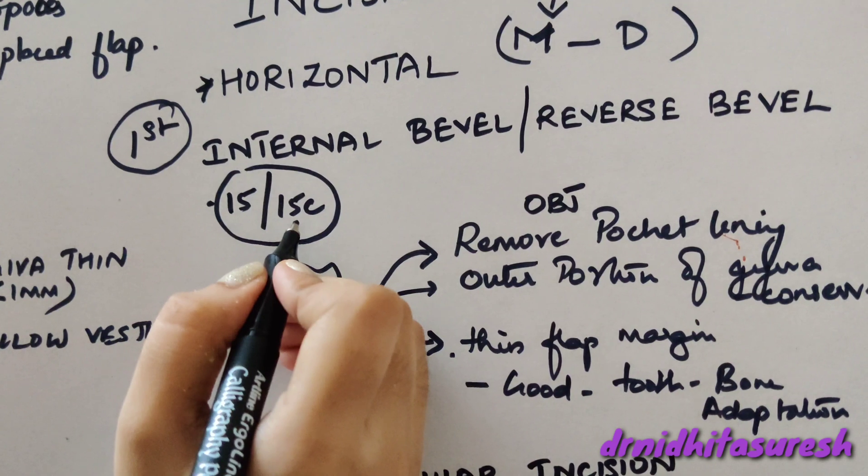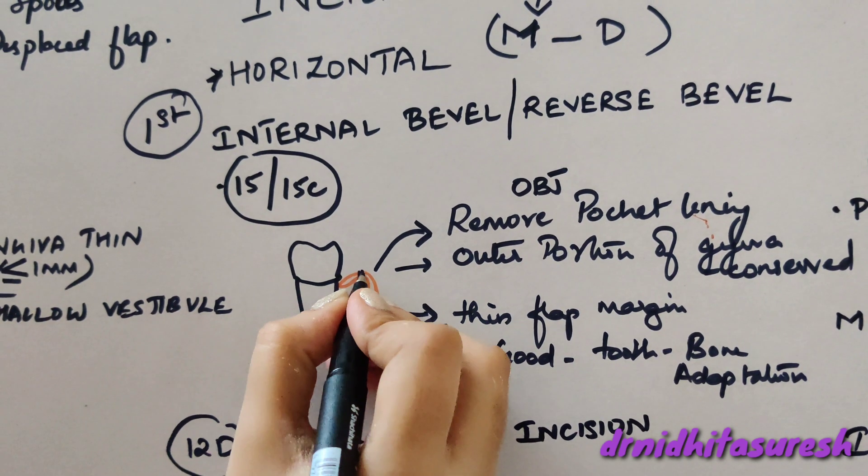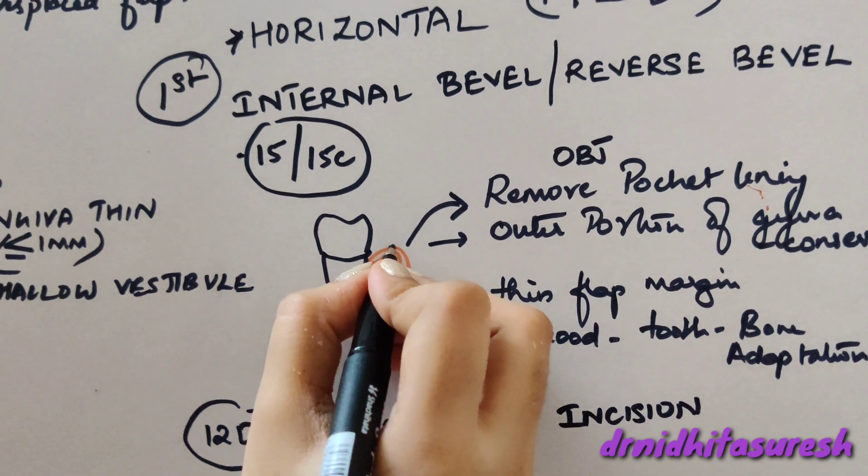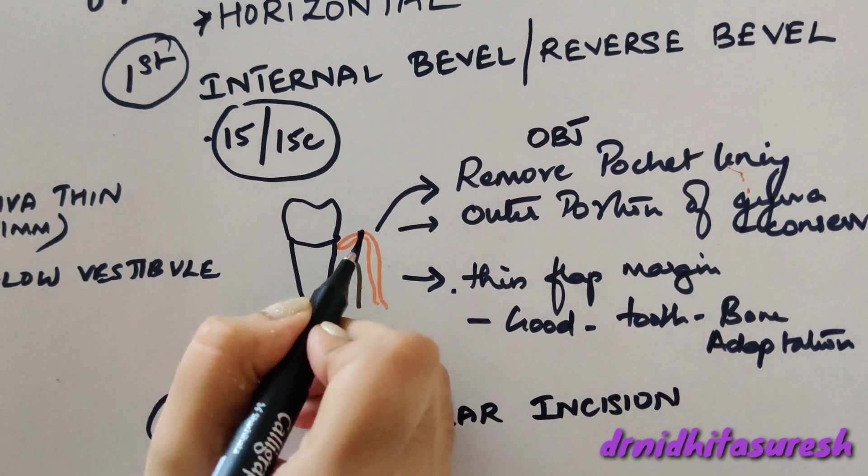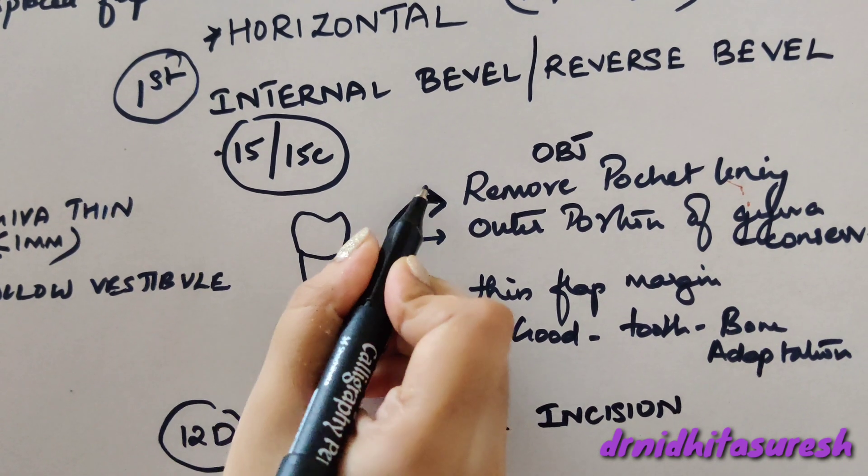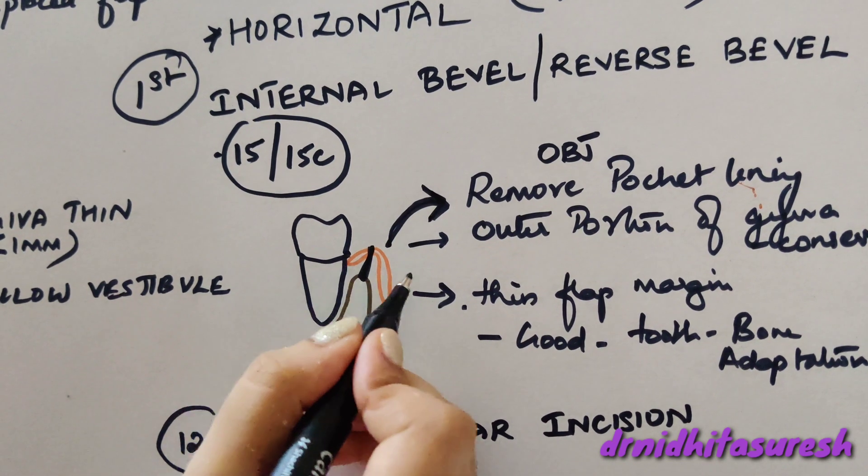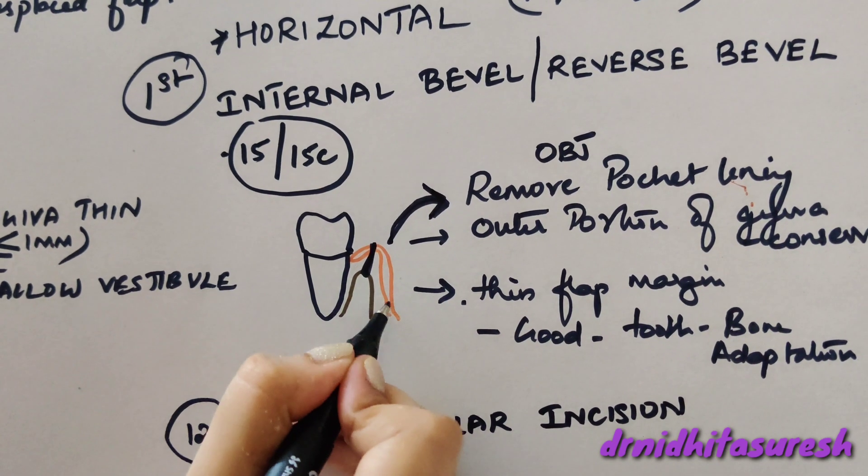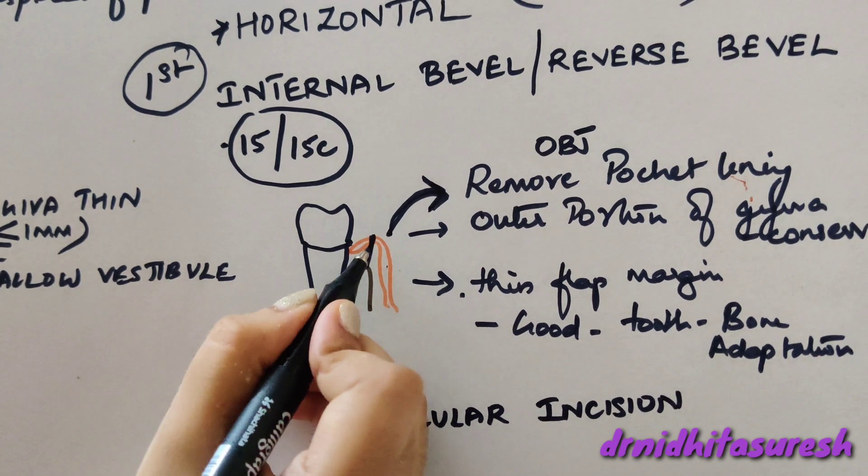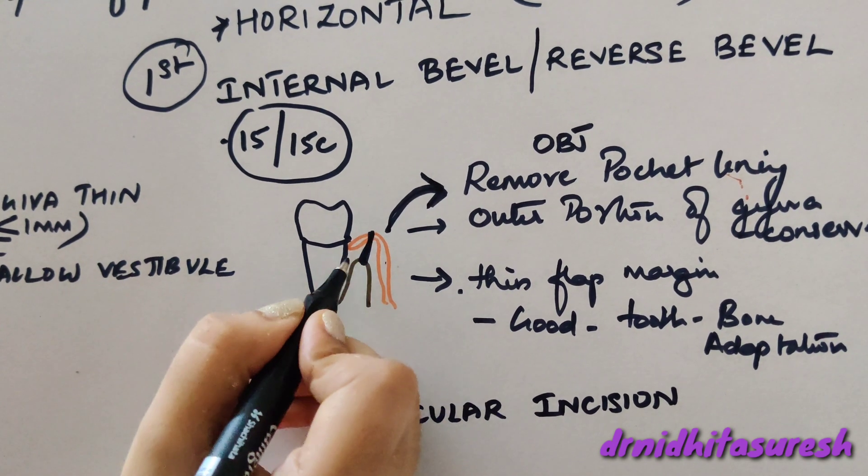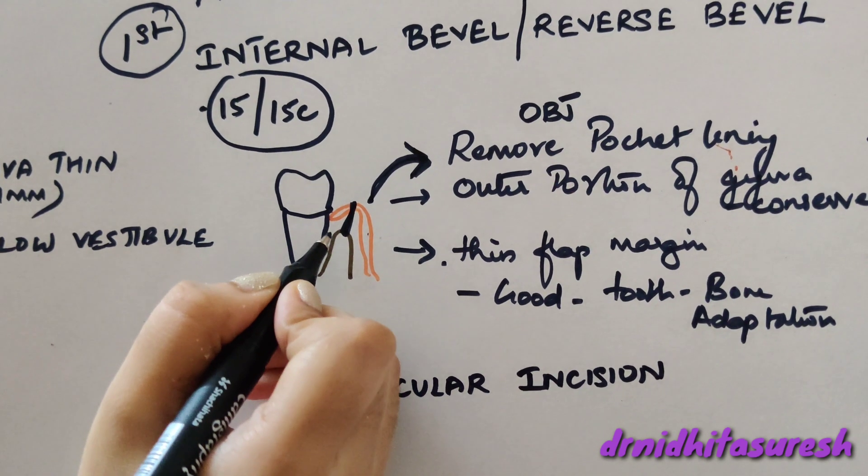You use 15-15C blade to do this incision, and it starts from the gingival margin to the alveolar crest. The objectives achieved by using this incision are that it removes the pocket lining. The outer portion of the gingiva is conserved and it provides a thin flap margin so that good tooth-bone adaptation occurs once you complete the flap.